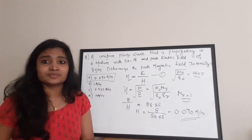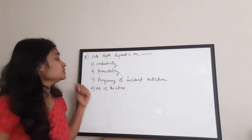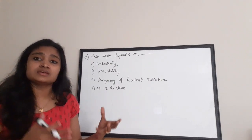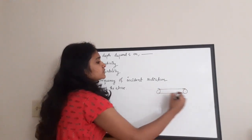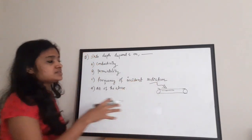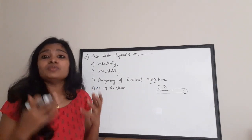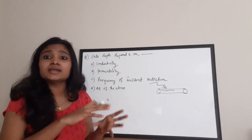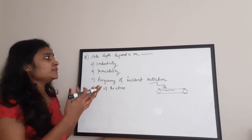The next question: skin depth depends on — A) conductivity, B) permeability, C) frequency of incident radiation, D) all of these. Before answering, skin depth is defined as follows: whenever an electromagnetic wave is incident on a conductor, after a particular depth or distance, the wave starts getting attenuated. The depth at which this attenuation becomes pronounced is called the skin depth.